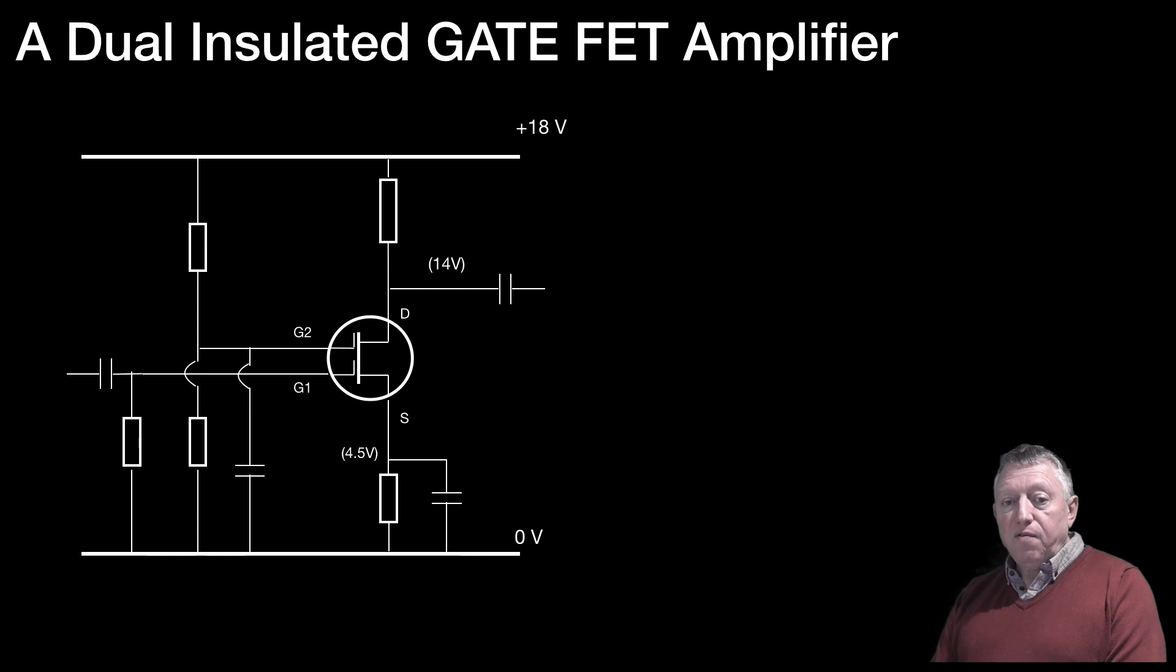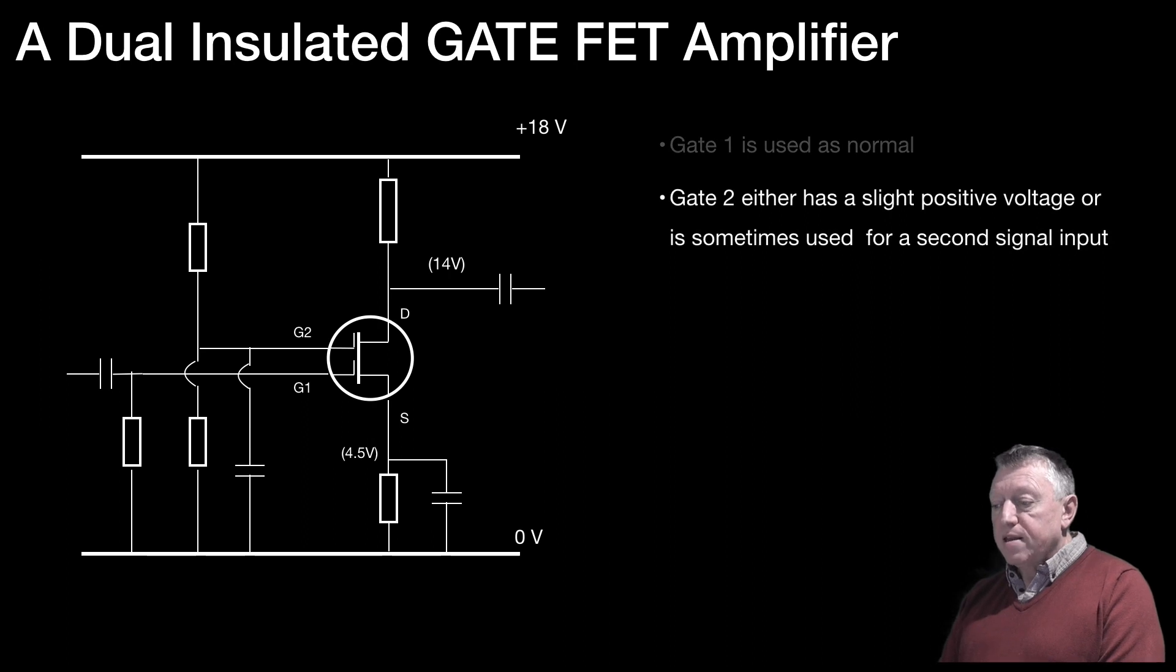So, there we have a dual-insulated gate FET amplifier. And so, you can see there, gate 1 being used as normal, and gate 2 having some bias on it. So, gate 1 is used as normal. Gate 2 either has a slight positive voltage, or is sometimes used for a second signal input.